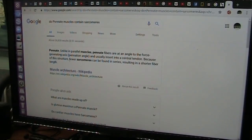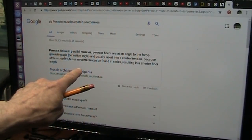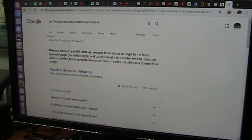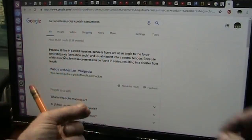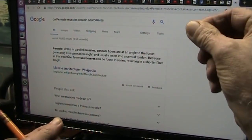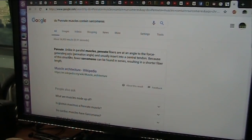Sarcomeres, those are the muscle fibers. Unlike in parallel muscles, pennate fibers are at an angle to the force generating axis. So they're like sideways muscles. And usually insert into a central tendon. Because of this structure, fewer sarcomeres can be found in series, resulting in a shorter fiber length. Instead of running between an arm and an elbow and stretching, they run sideways between two bones.